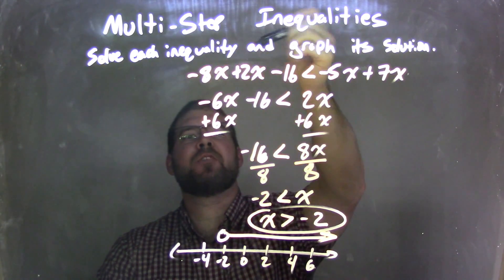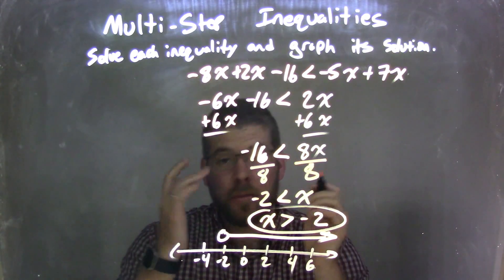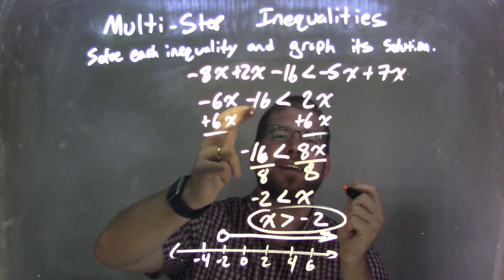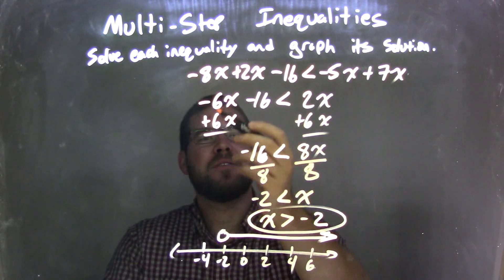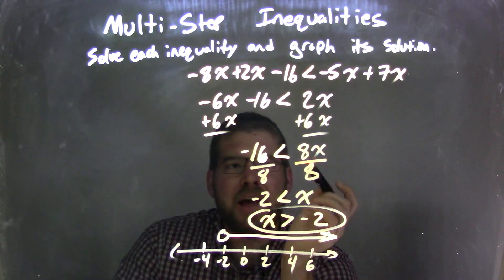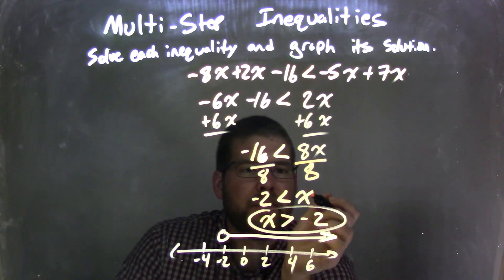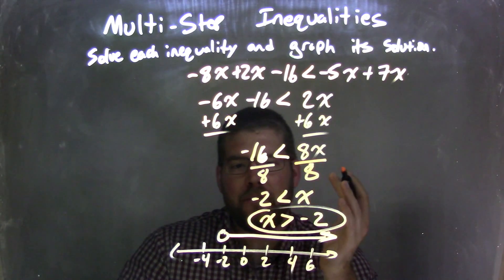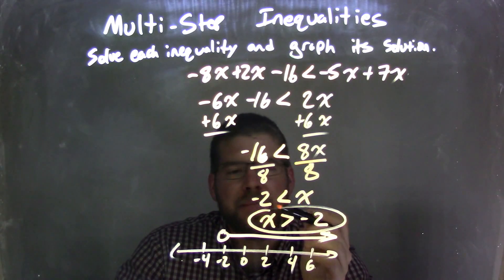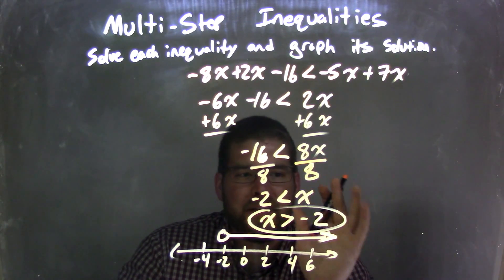Let's recap. We had negative 8x plus 2x minus 16 is less than negative 5x plus 7x. I saw there were x's on both sides, so I combined them first, giving me negative 6x minus 16 on the left and positive 2x on the right. I then brought my 6x over to the right, giving me negative 16 is less than 8x. I then divided by 8 on both sides, giving me negative 2 is less than x. I rewrote this with x first — flipping the inequality — so x is greater than negative 2. X is isolated and we have our answer.